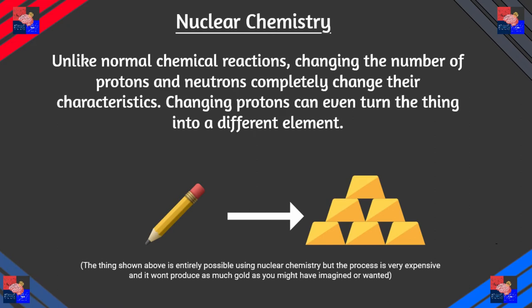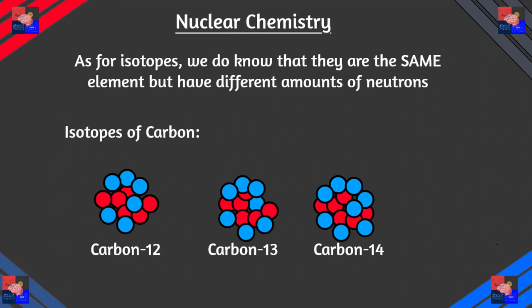Changing the number of protons and neutrons in an atom completely changes their characteristics. Changing the proton can literally change the element. So you can basically turn lead to gold — though realistically speaking, this would be extremely costly and expensive, and the gold produced won't be worth the cost. But it is possible. And of course we've learned about isotopes, when the number of neutrons are different. These changes of the proton and of the neutron are two different types of transformation, and these are called transmutation.